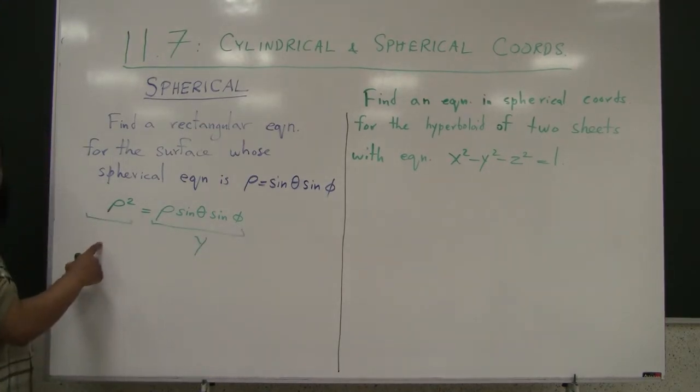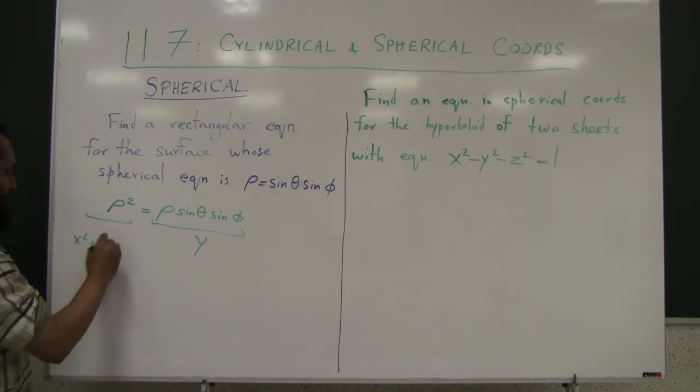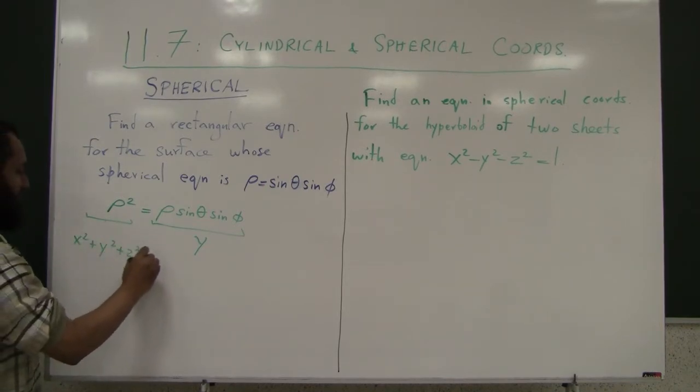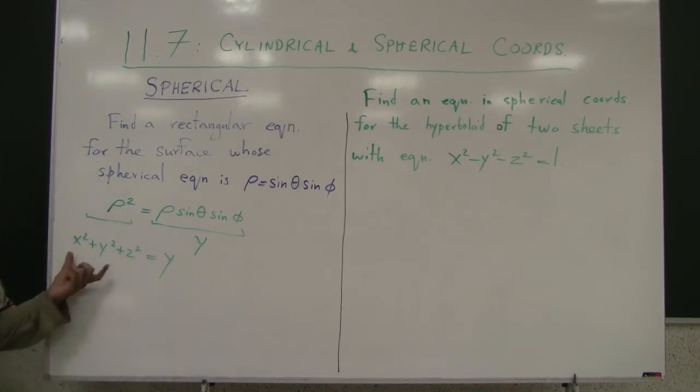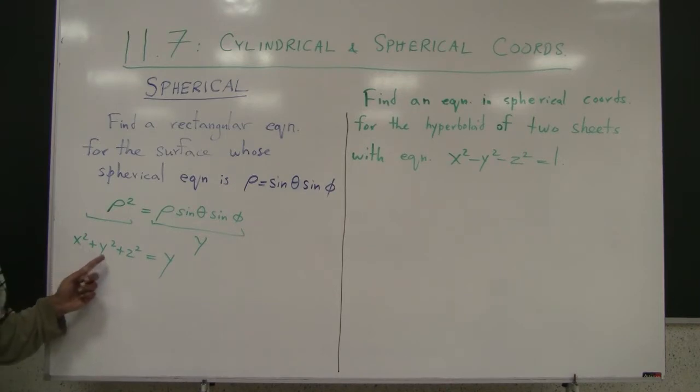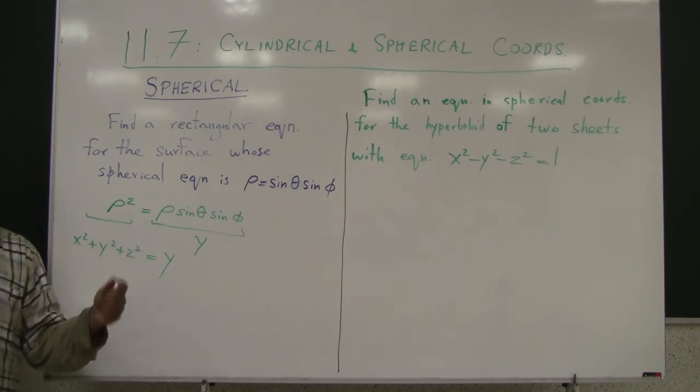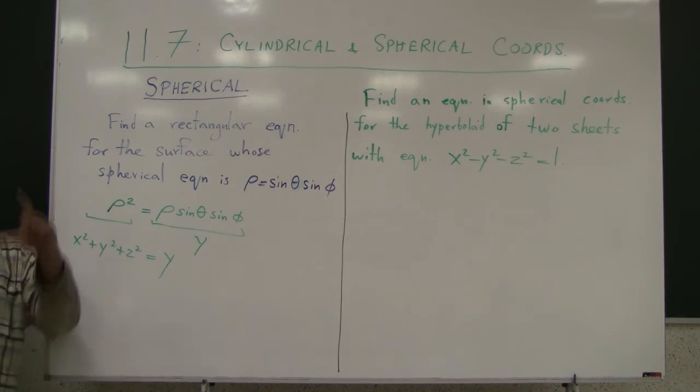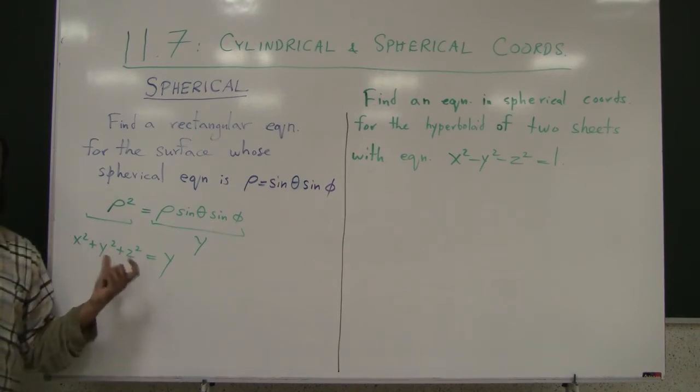And ρ², if you remember, is x² + y² + z². So you get the equation x² + y² + z² equals y, right? Now, what do we do here? Recall from 11.6 that the form of this equation is that of a quadratic surface.